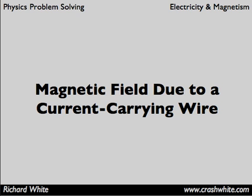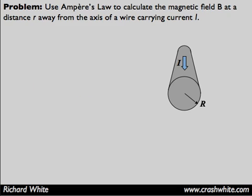We're going to look at how to solve magnetic field problems using Ampere's law. Magnetic fields due to a current-carrying wire. Here's the problem that's been set up for us. We're going to use Ampere's law to calculate the magnetic field B at a distance r away from the axis of a wire carrying current I.